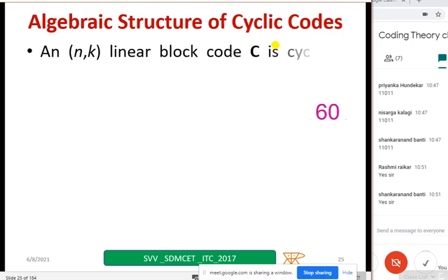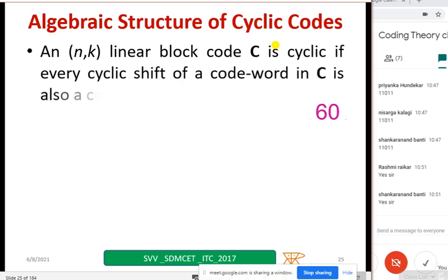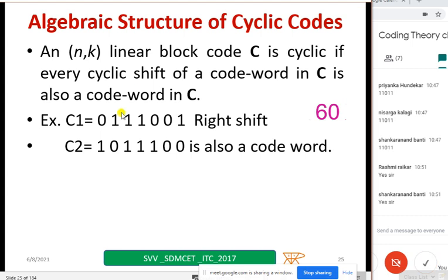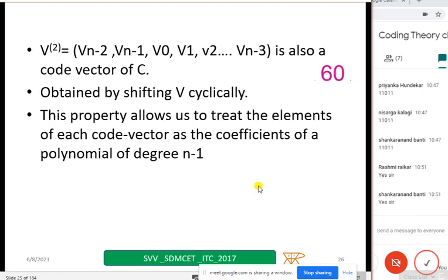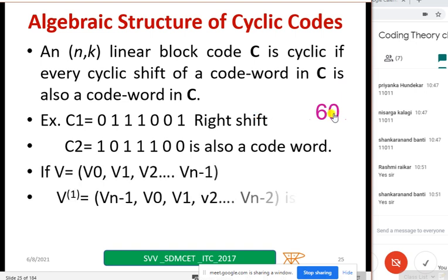An n comma k linear block code C is cyclic if every cyclic shift of a code word in C is also a code word. Just now I had told that. An example I have taken: C1, just I have taken a right shift, I got this one. This side one, zero, triple one, double zero, zero. I got this is also a code word. And in general I can write in terms of V, and if I rotate or if I shift right, that will also become a code word. So just copy down the information from this slide.